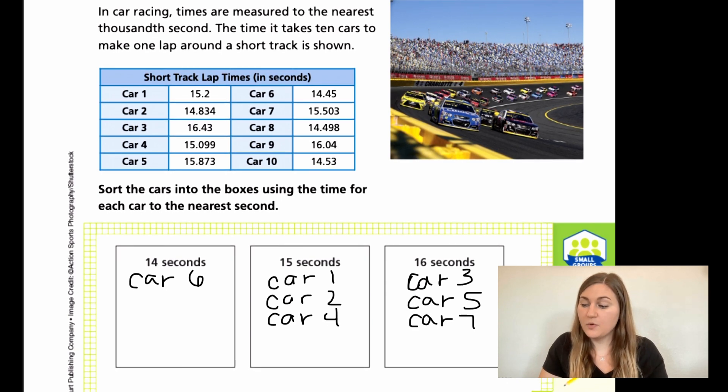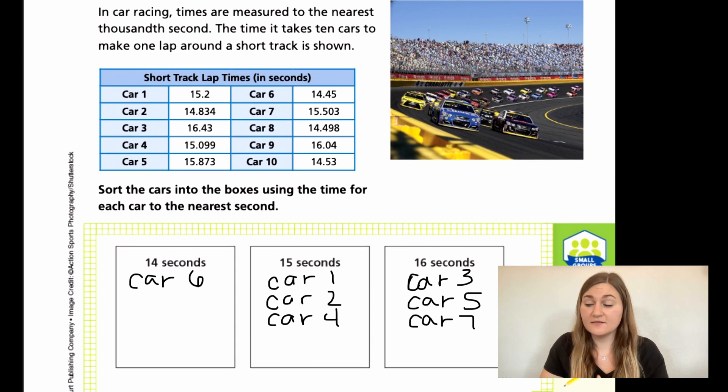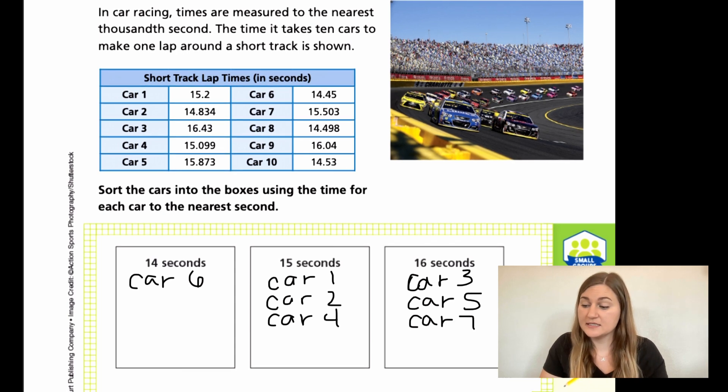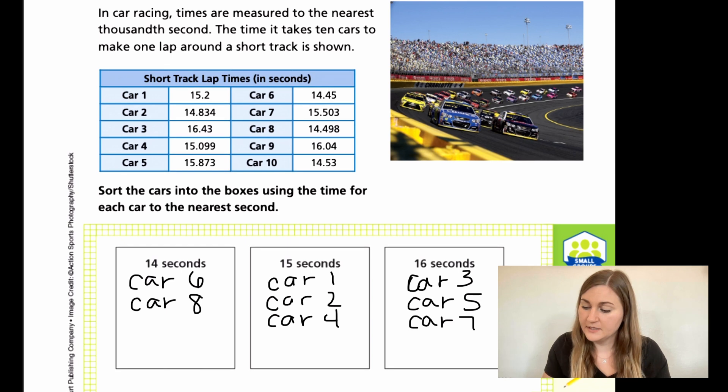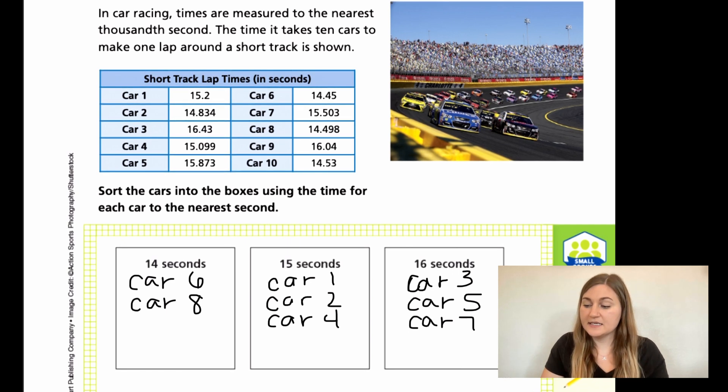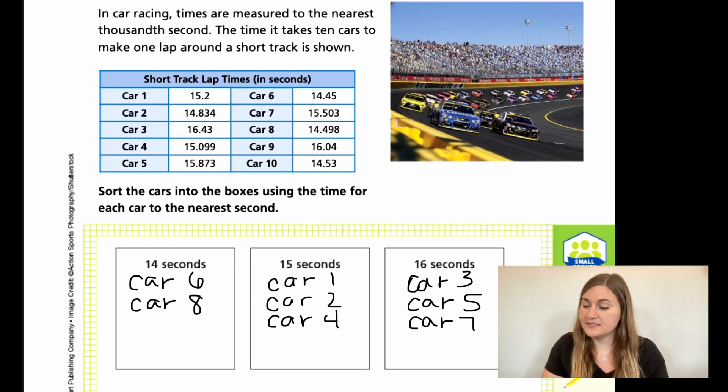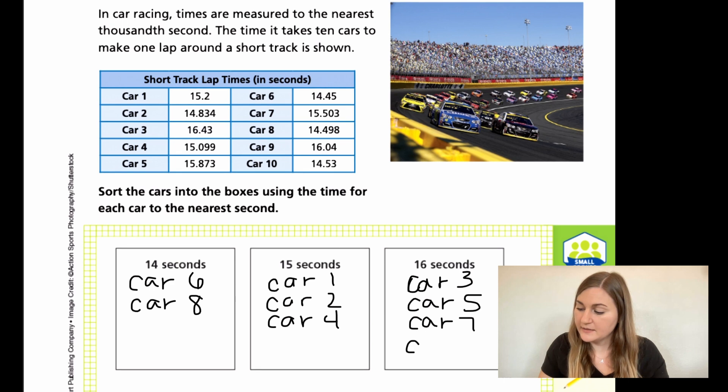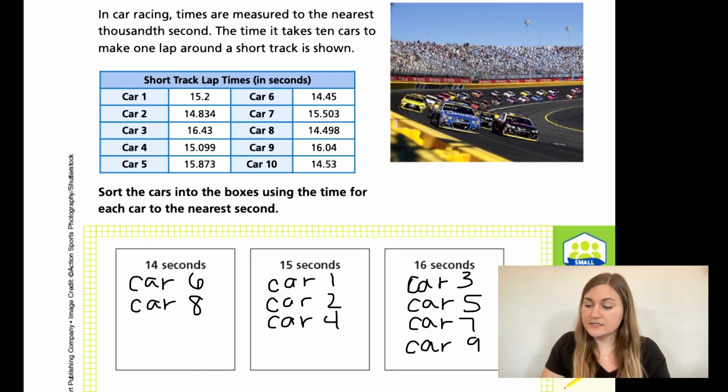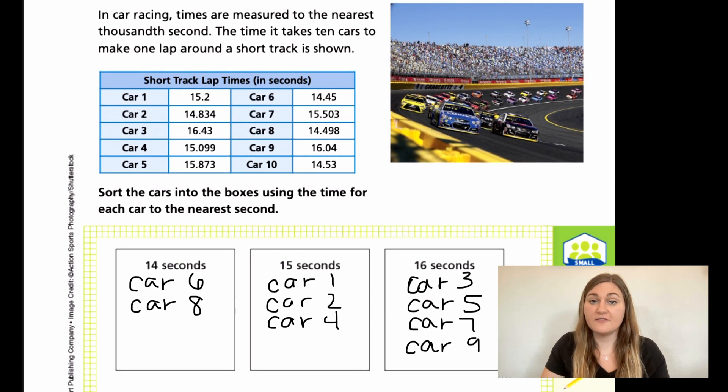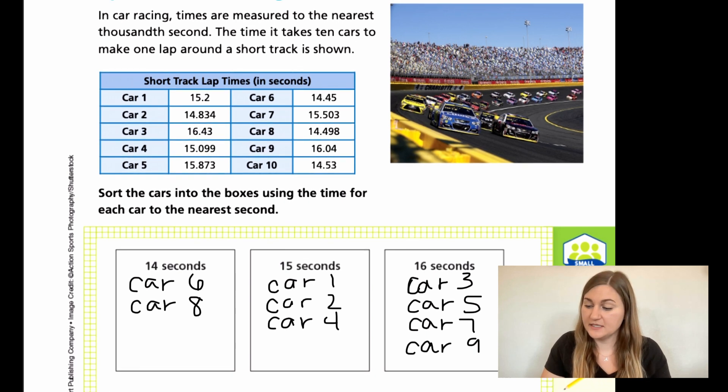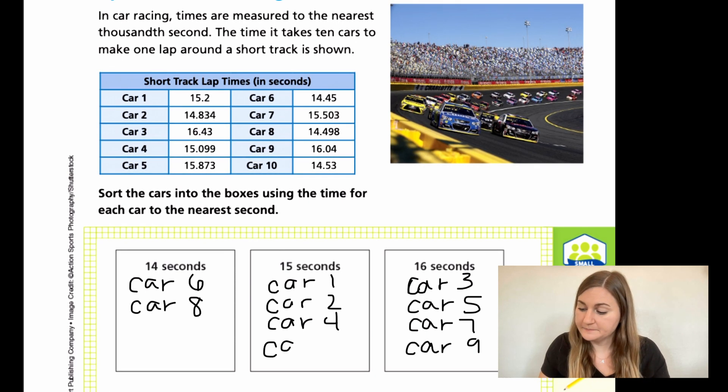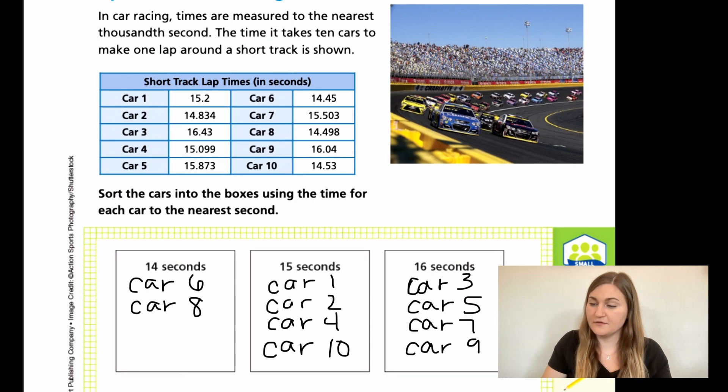Car eight is 14.4. Remember, less than five keeps us at that number, so that is going to stay at 14. Car nine is 16.0. Just keep it at 16. And then car 10 is 14.5, five or higher. So 14 is going to be bumped up to 15. So car 10 is going to be under the 15 mark.